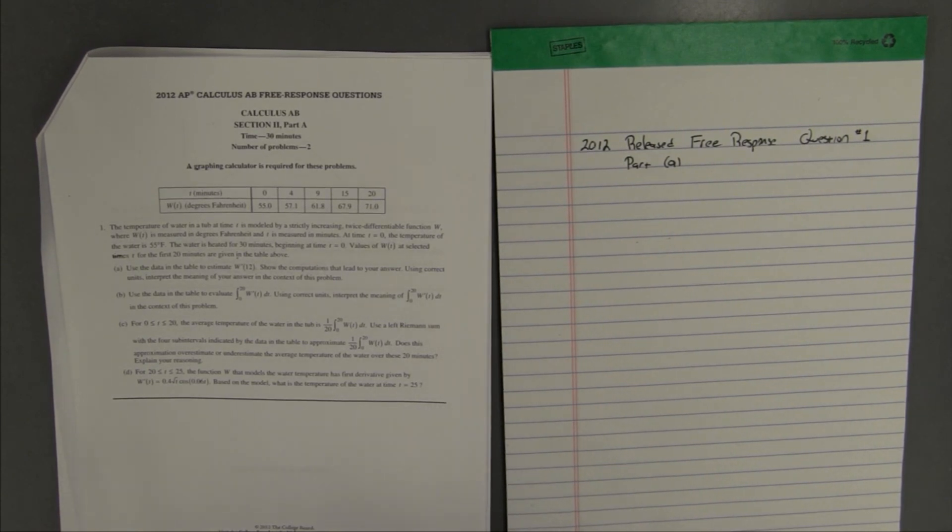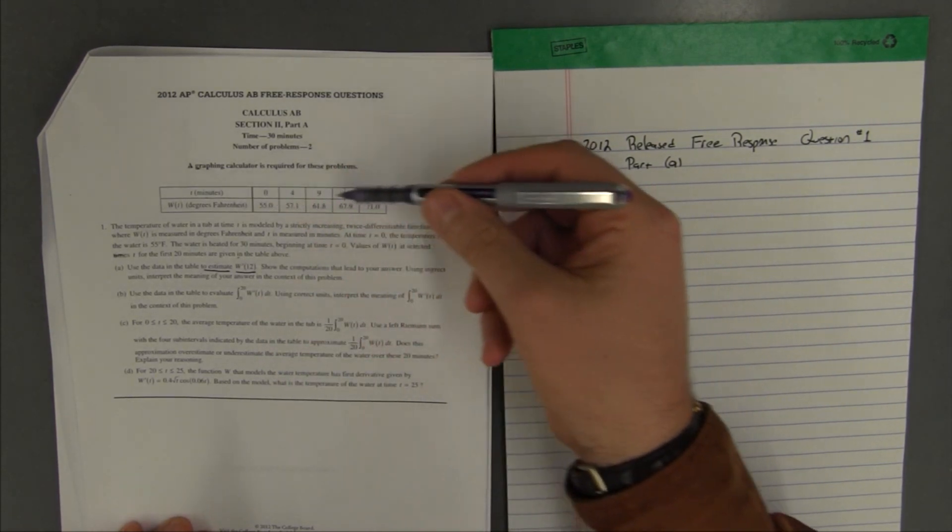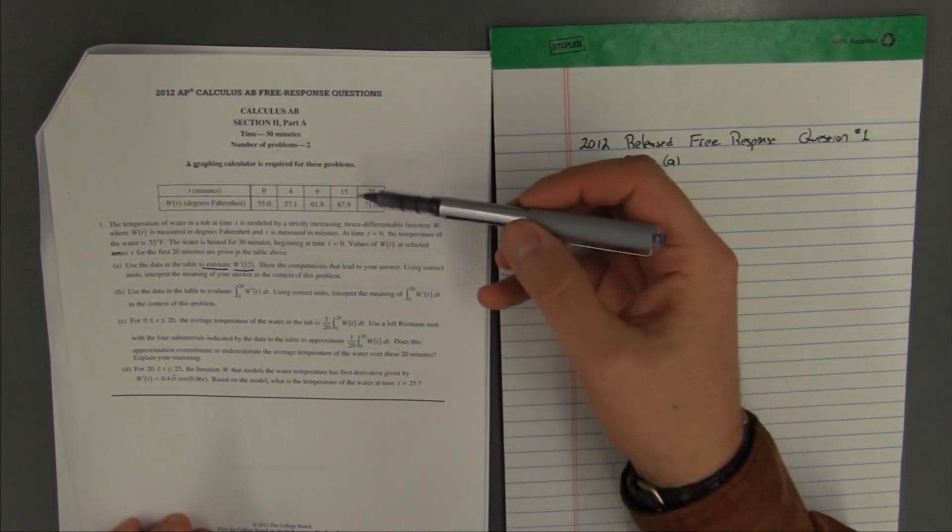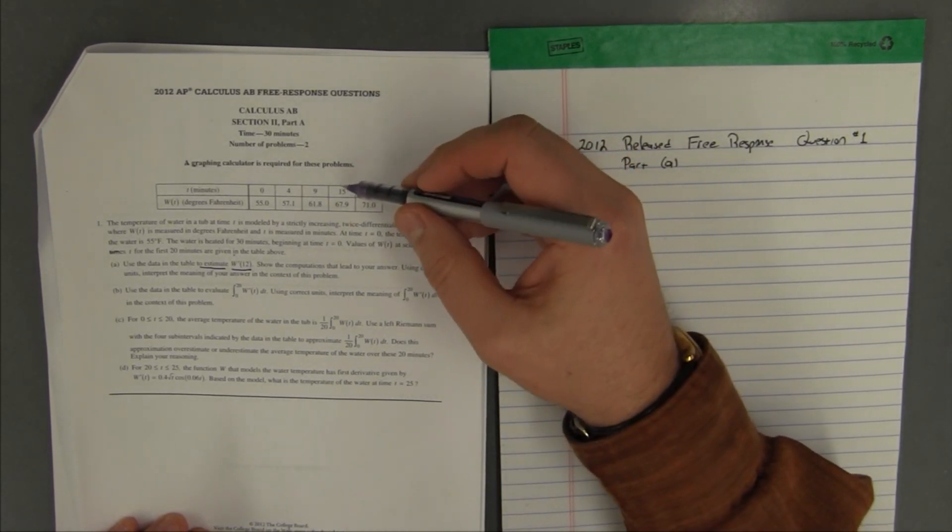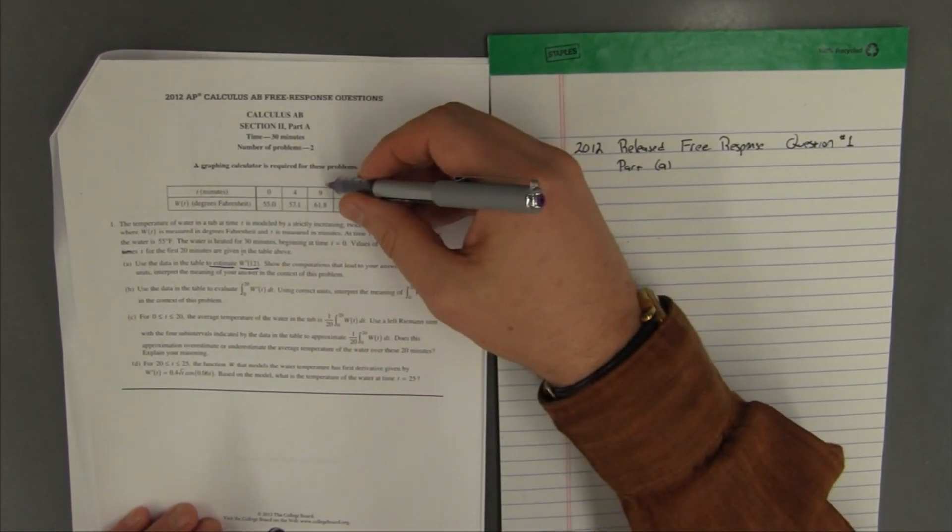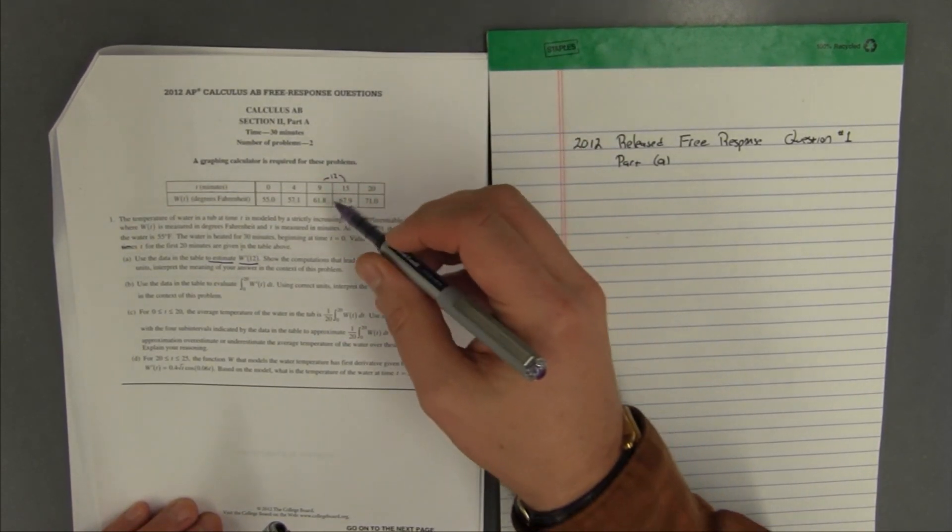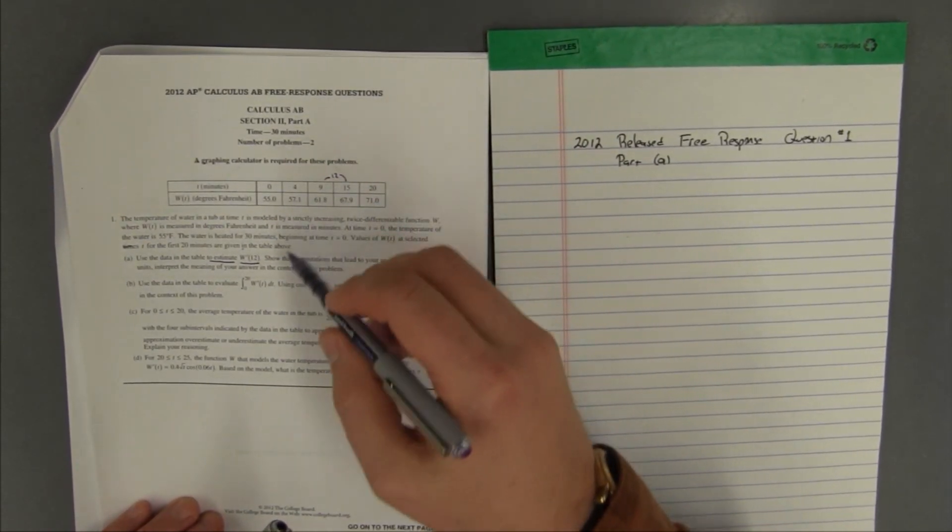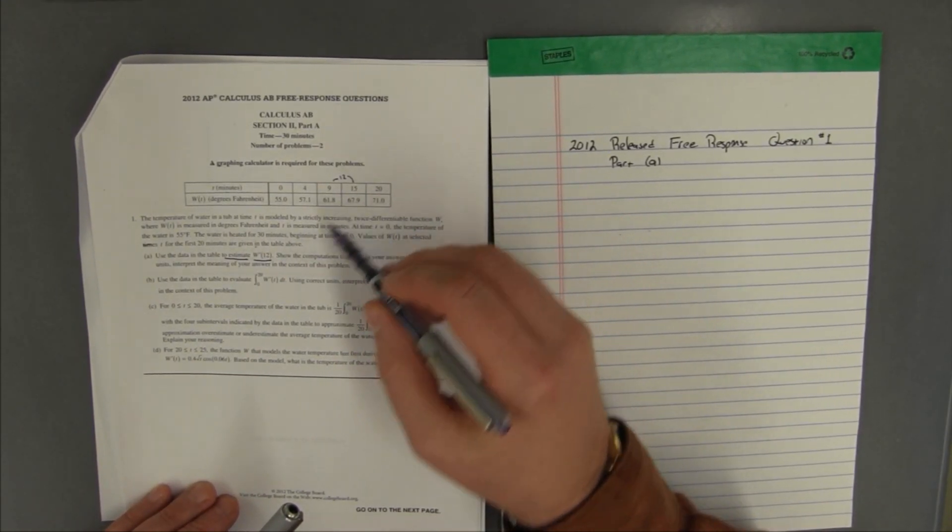So our job is to estimate w prime of 12. Now up here, we do not have w prime. So one mistake that students occasionally make is to think that, oh, where's 12? 12 is in between the 9 and the 15, so we use 12 in here. So a mistake is to think that the value we're looking for is the average of 61.8 and 67.9.